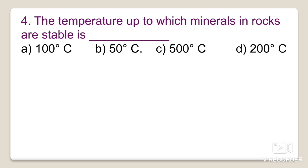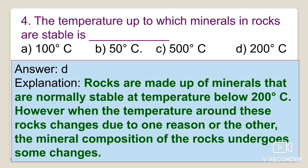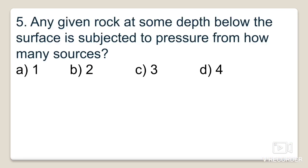The fourth question asks: up to what temperature are minerals in a rock stable? Options are 100°C, 50°C, 500°C, or 200°C. Rocks are made up of minerals that are normally stable at temperatures below 200°C. When the temperature around rocks changes, the mineral composition undergoes changes — that process is metamorphism. The correct option is option D — less than 200 degrees Celsius.